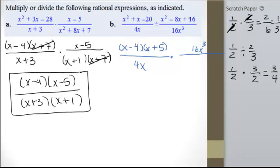We're going to go ahead and make it multiplication and put the 16x cubed in the numerator. Okay, factors of 16 that add up to a negative 8. That would be a negative 4 and a negative 4.